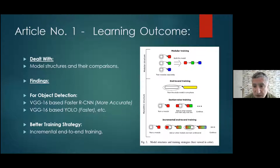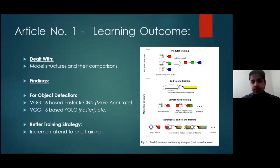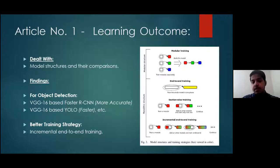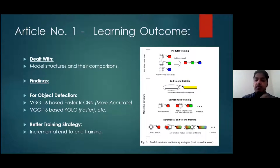In imitation learning, there are many implementations, and some include reinforcement learning. After the robot has seen the task being done by a human and then tries to do it, if it succeeds, there is a reward — this is a kind of reinforcement learning implementation.